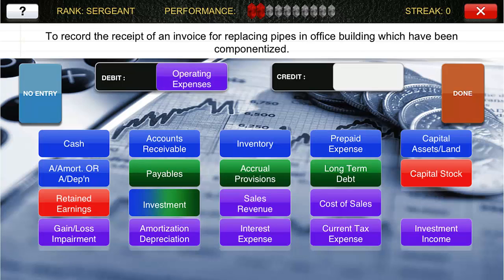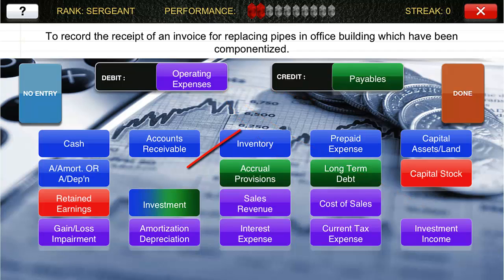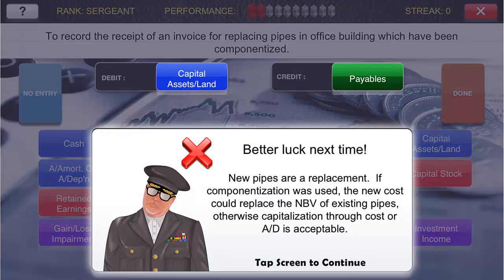To play, you simply use your finger and drag up the relevant account to the debit. You do the same by identifying the relevant account for the credit and bringing it up to the credit area. Upon completion, hit done. As you post each journal entry, you will be provided with feedback that explains the logic behind each transaction in plain, easy-to-understand English.